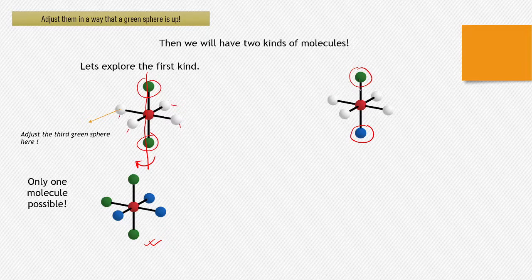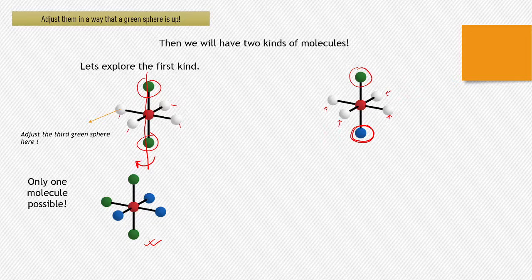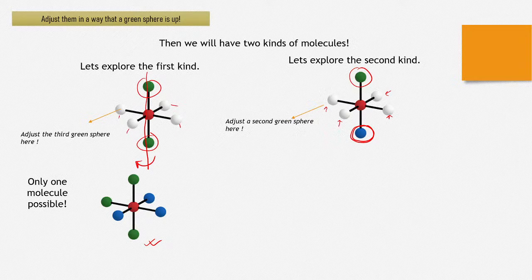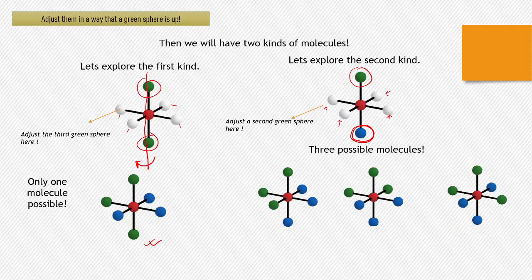When we have a green pointing up and the blue is opposite to this green, then we will have two greens and two blues at these four positions somewhere. This situation is a little more complicated, because there is not only one thing I can command to be at a certain position. Let's explore the second kind — let's adjust a second green sphere.